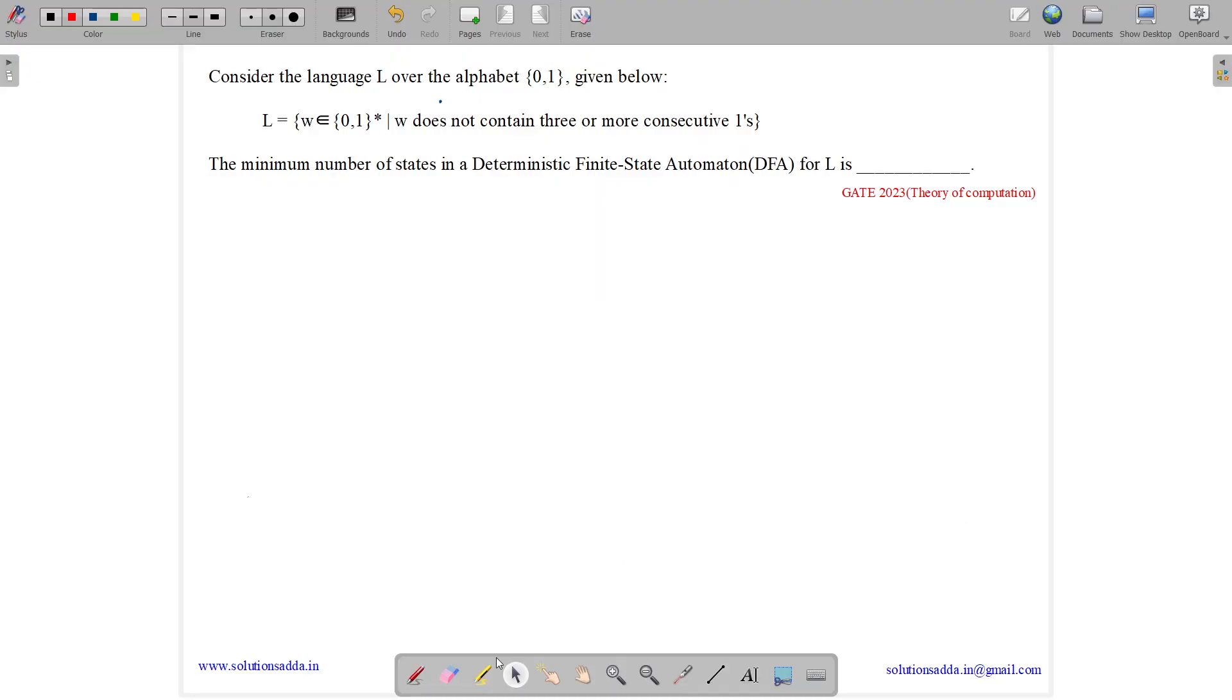This question belongs to Theory of Computation and was asked in GATE CSE 2023. The question states: consider the language L over the alphabet given below. L is the set of all W belonging to Σ* such that W does not contain 3 or more consecutive ones. The minimum number of states in a Deterministic Finite Automaton (DFA) for L is.